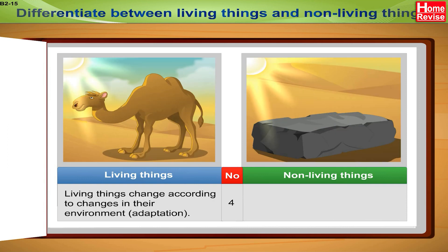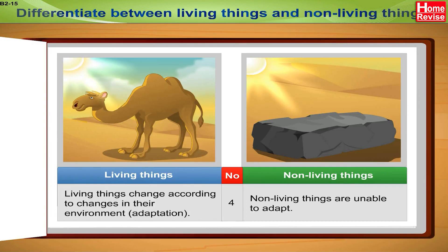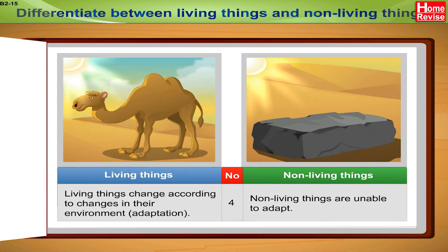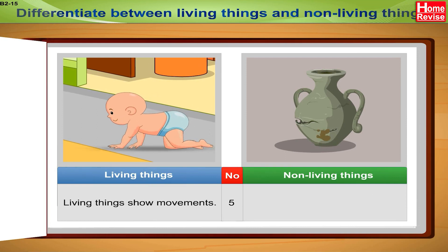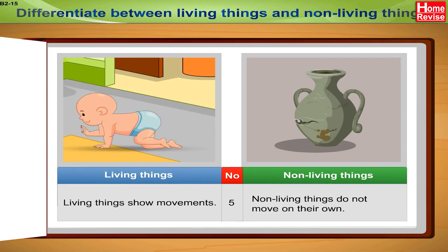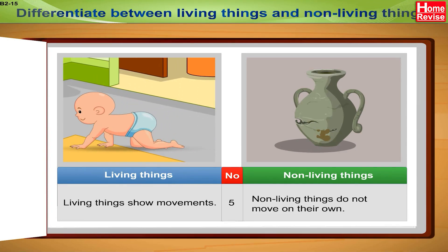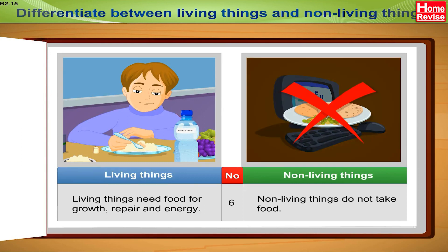4. Living things change according to changes in their environment — called adaptation — while non-living things are unable to adapt. 5. Living things show movements; non-living things do not move on their own. 6. Living things need food for growth, repair, and energy, while non-living things do not take food.